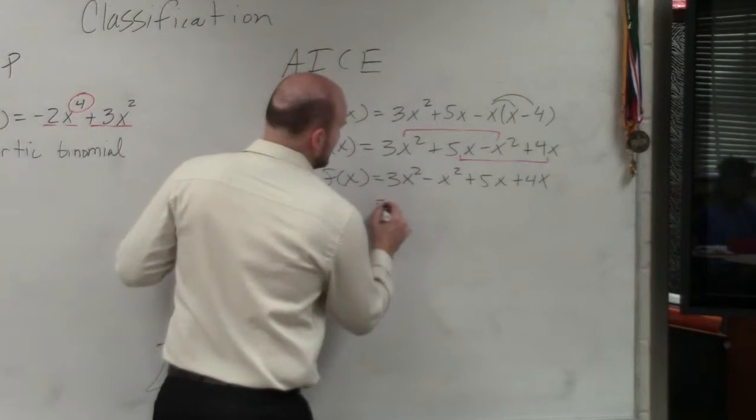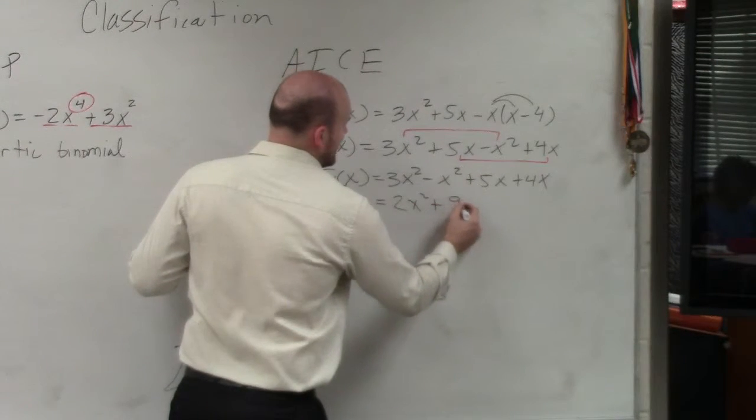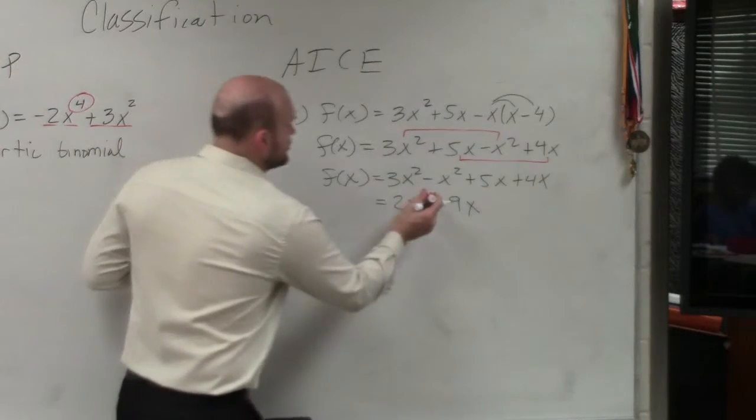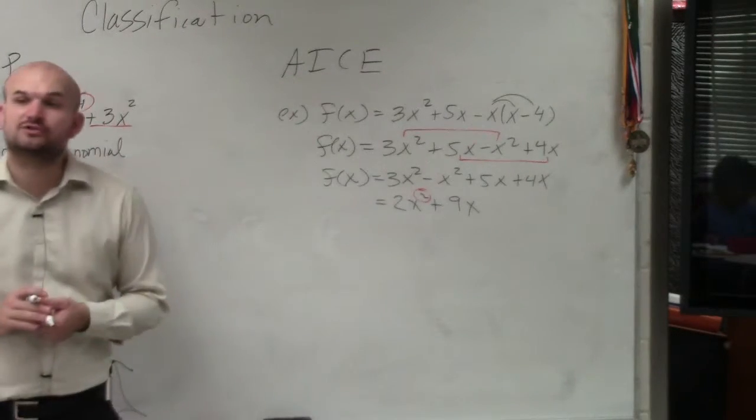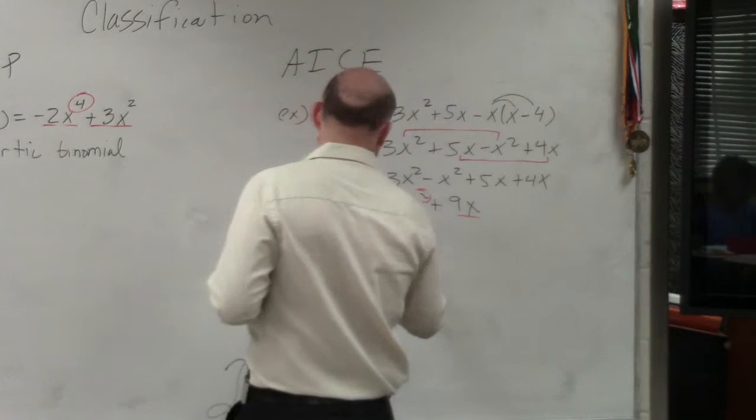3x squared minus x squared is 2x squared. 5x plus 4x is 9x. Therefore, we can see that the degree is 2. So it's definitely a quadratic. But there is only two terms. So it is a quadratic binomial.